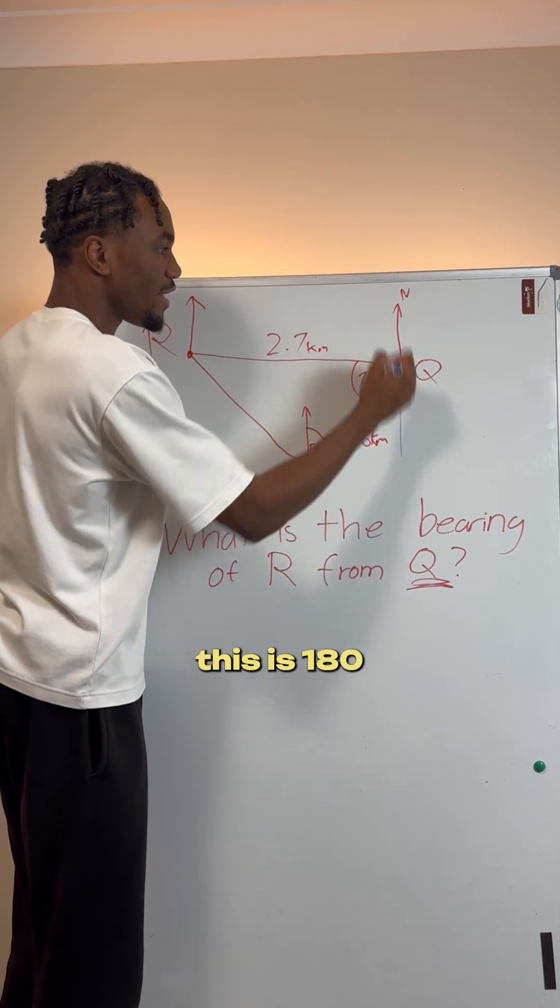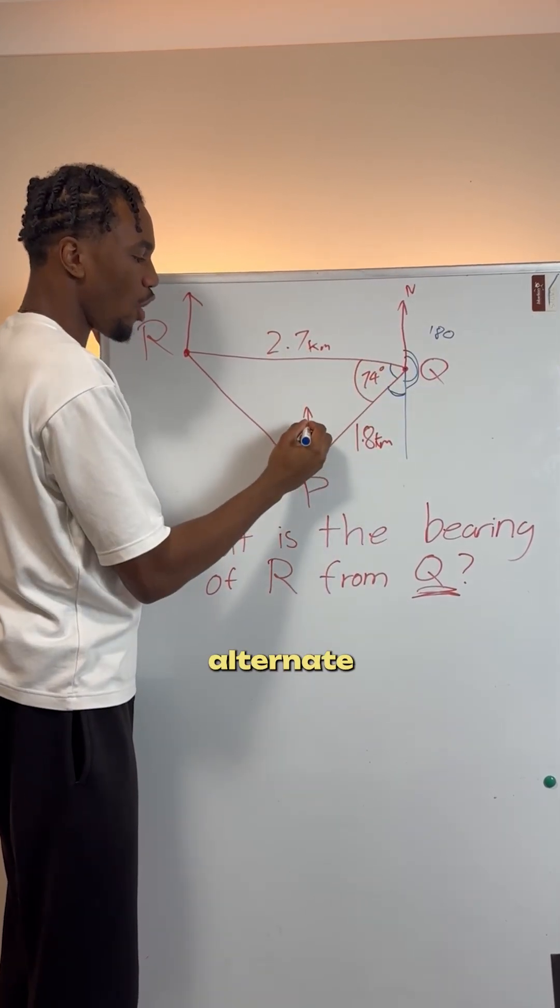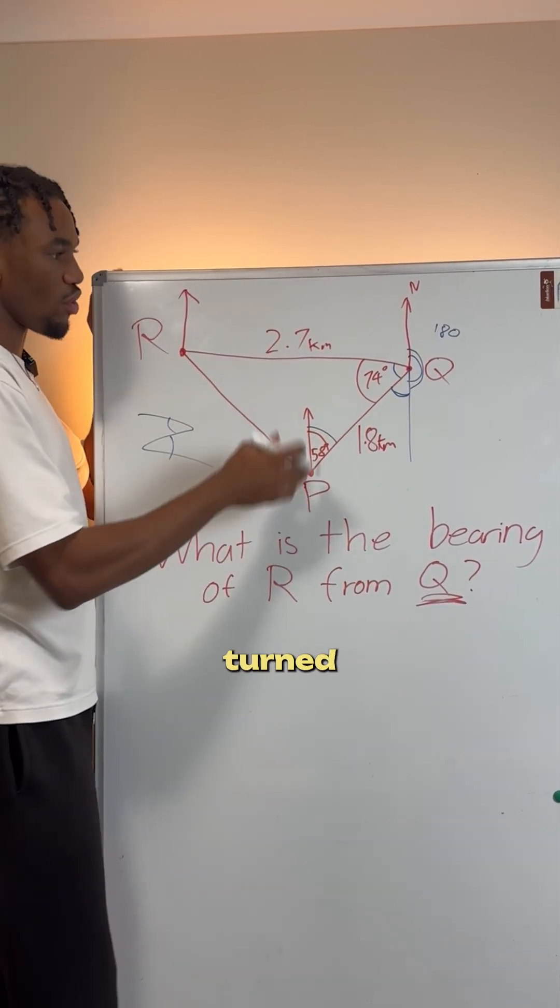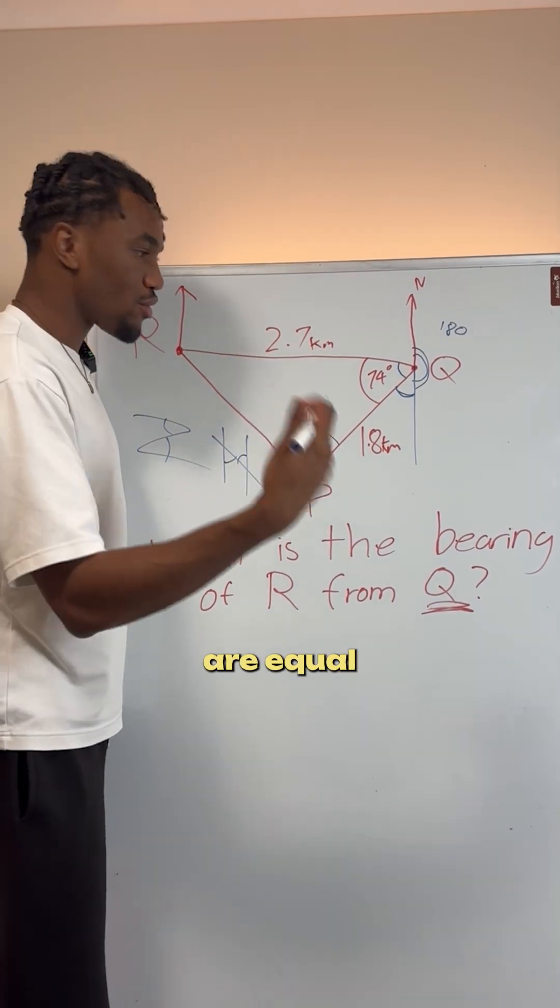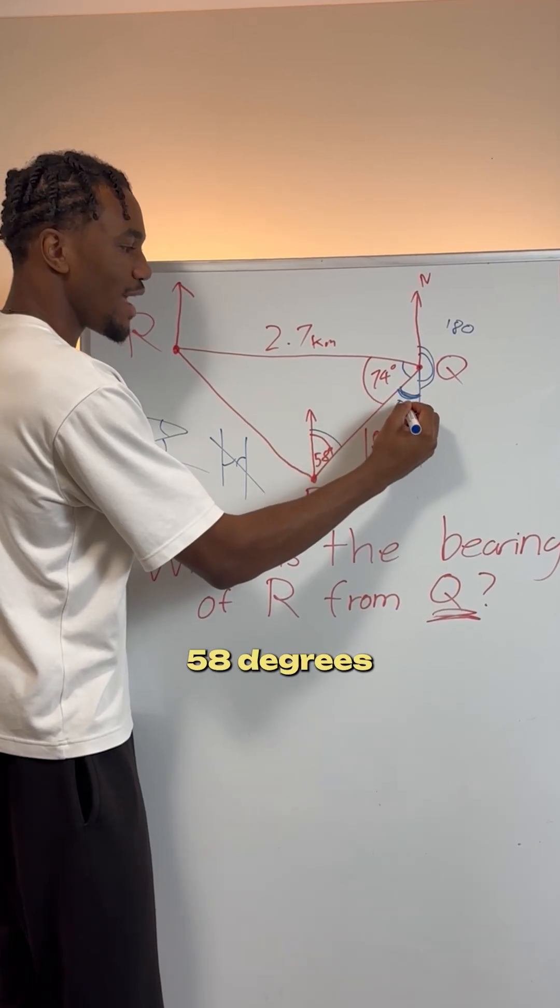We know that this is 180 degrees and then this angle in here is an alternate or Z angle here. Kind of looks like a Z, but just turned that way. We know that alternate angles or Z angles are equal. So this angle in here is going to be 58 degrees.